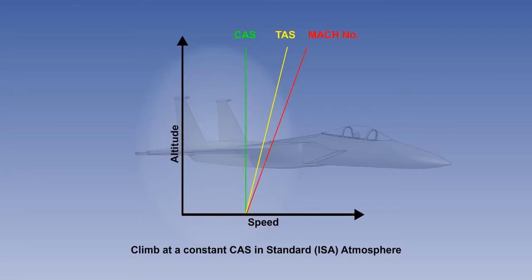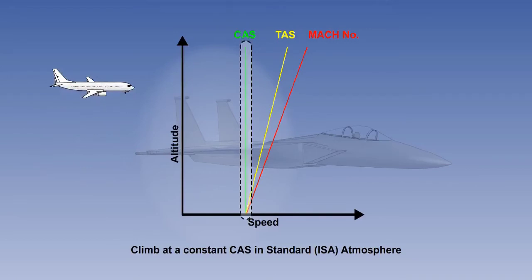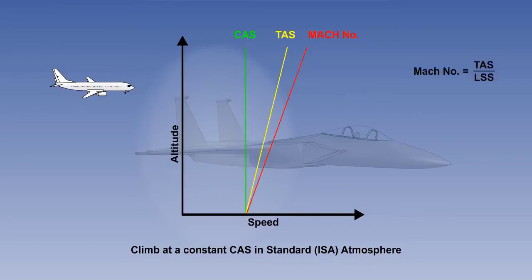If we think about it, we can see why this happens. The density of air changes with temperature and pressure, and will therefore vary with altitude. If a constant CAS is maintained during a climb in the standard atmosphere, as air density and temperature decrease, the TAS will increase. The speed of sound, on the other hand, will decrease. However, the Mach number is a ratio of the TAS to the local speed of sound, and therefore the Mach number increases proportionally.